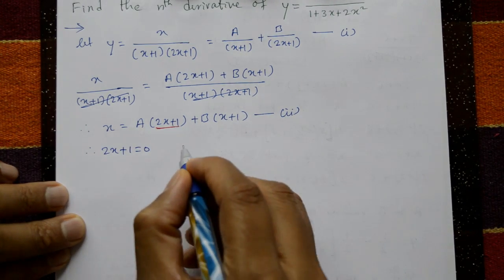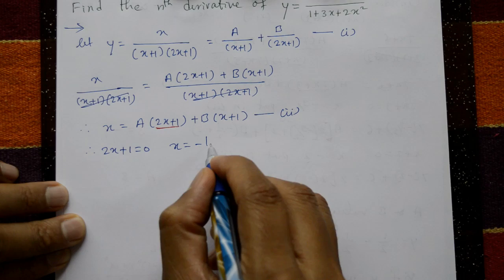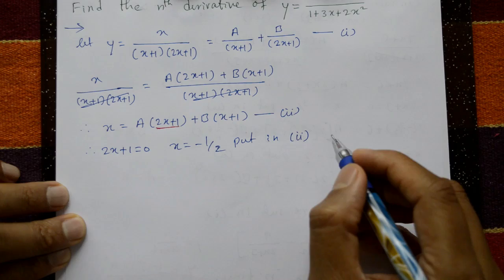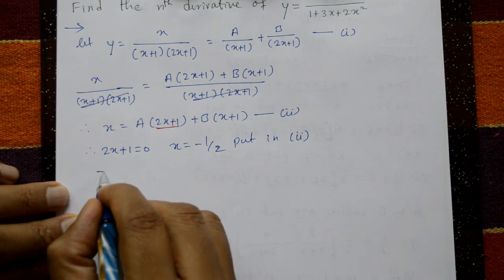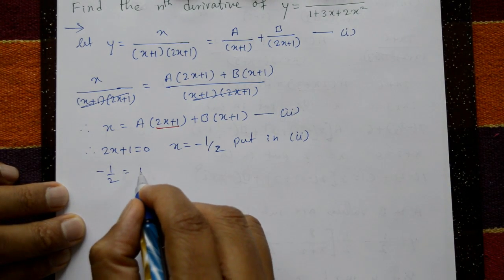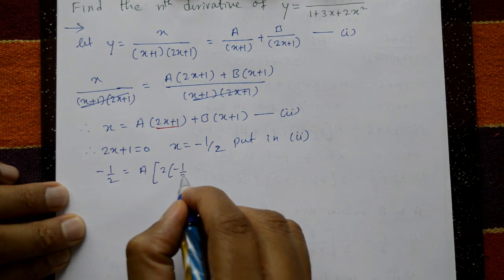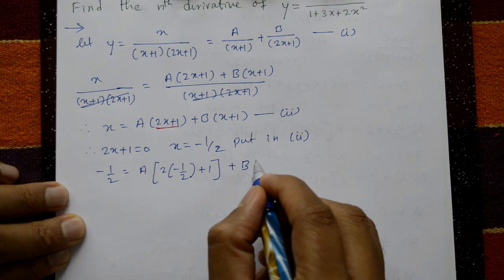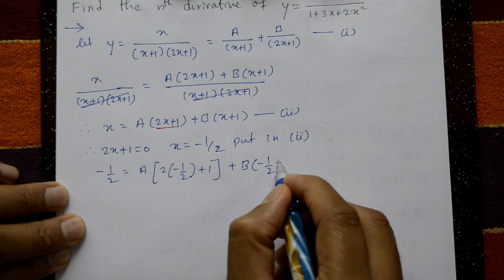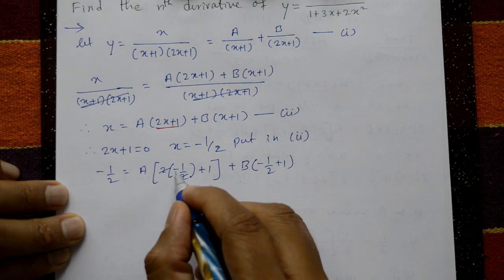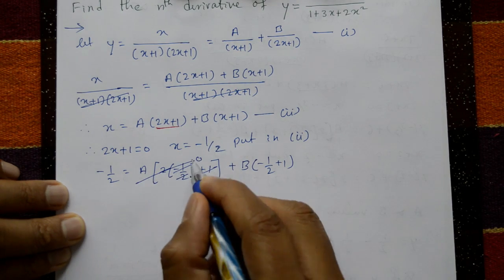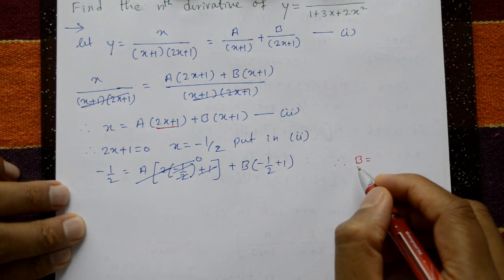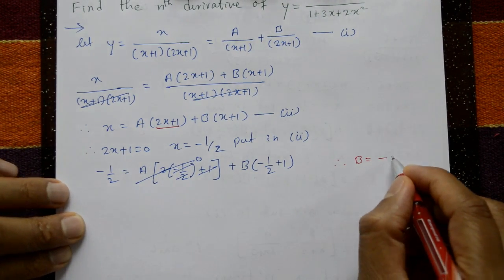Take 2x+1 = 0, so x = -1/2. Put x = -1/2 in equation number 2: -1/2 = A(2(-1/2)+1) + B(-1/2+1). The A term cancels to 0. Therefore B = -1.